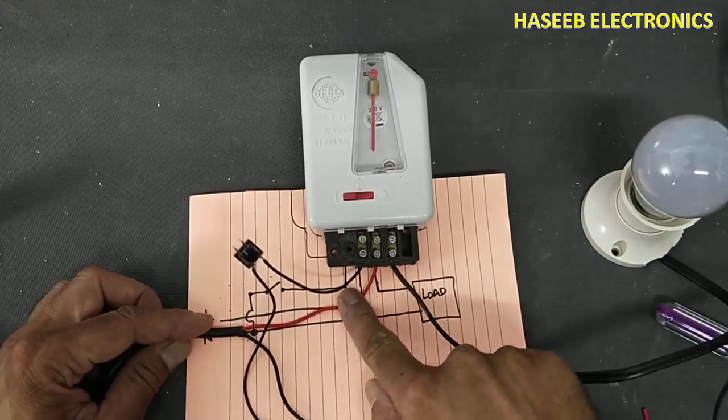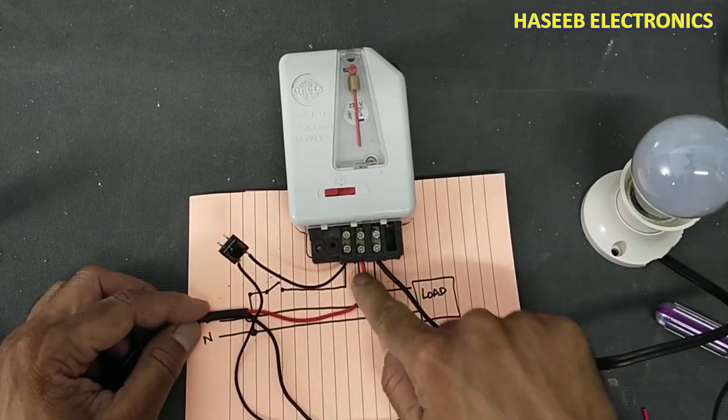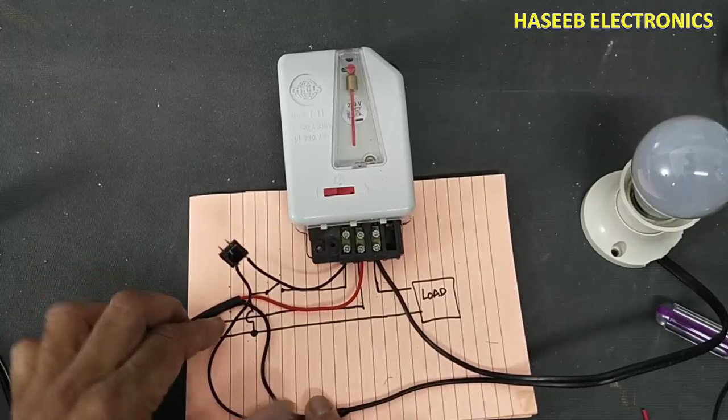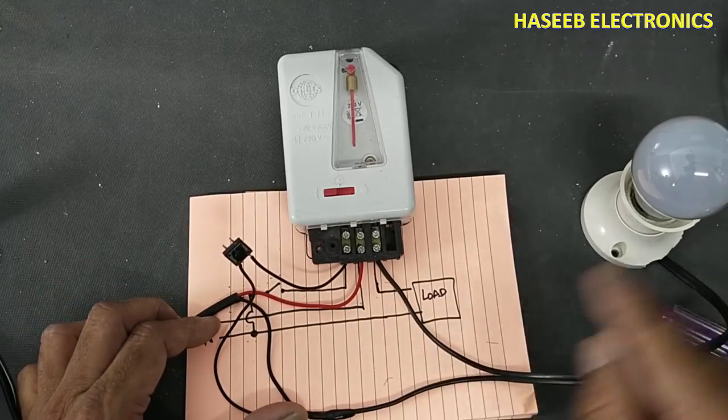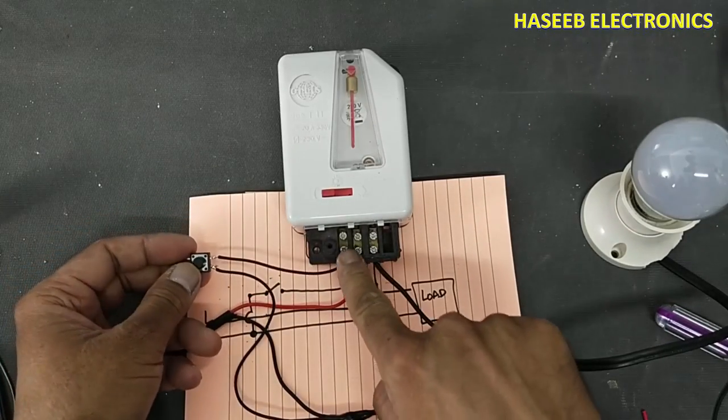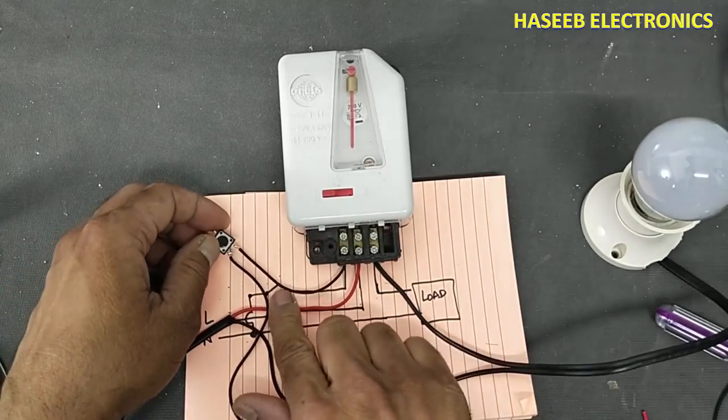Line is going to the center pin that is here. Neutral is coming to the lamp, to the load, and neutral is going to the switch. Switch second end is going to the first pin of the analog timer.